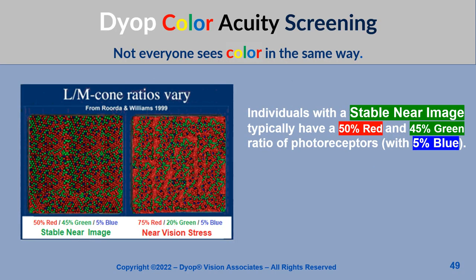However, not everyone sees color in the same way. Individuals with a stable near image typically have a 50% red and 45% green ratio of photoreceptors.